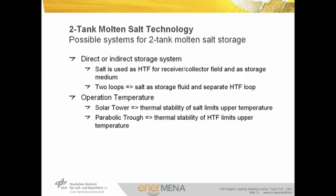In indirect storage systems, two separate loops are used, and the heat transfer fluid in the absorbers is different from the molten salt used in the storage system. The decision between direct and indirect systems depends on the operation temperature of the CSP facility. In today's parabolic trough systems, thermal oil is used in the absorbers, so two separate loops are used. In central receivers, molten salt is also used as HTF in the receiver, so direct storage can be applied.